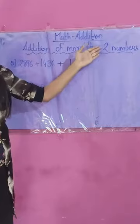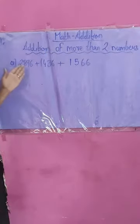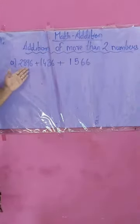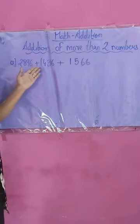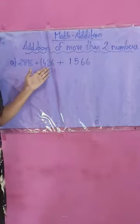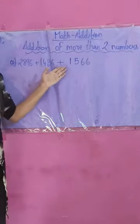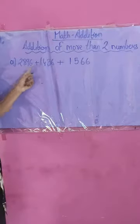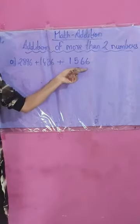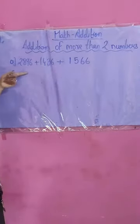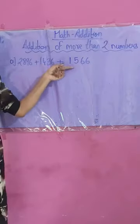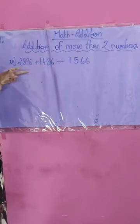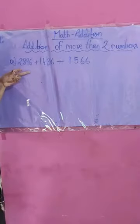If more than two numbers are given, how do we add them? Here I have taken an example: 2896 plus 1436 plus 1566. You can see there are more than two numbers — that is, three four-digit numbers.